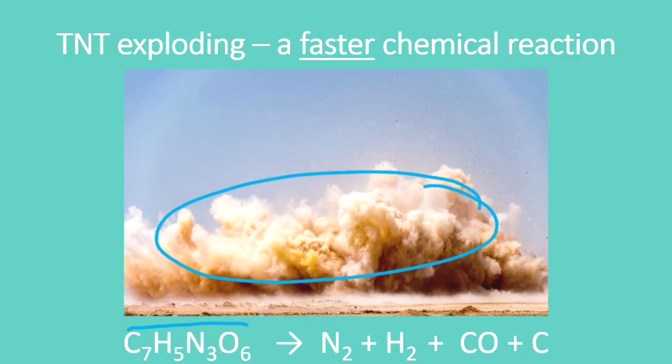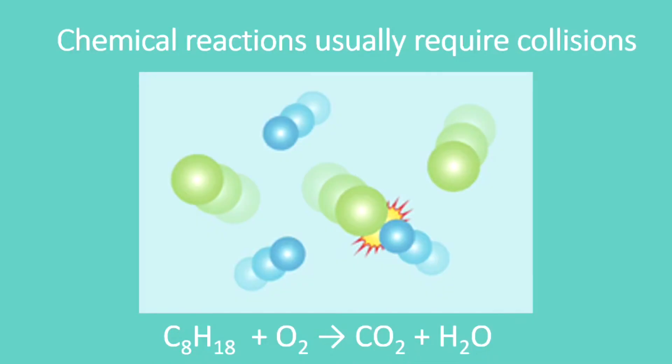Now, if we want to understand reaction rates, we have to understand what's called collision theory. It sounds fancy, but basically it just means that chemical reactions require collisions to go forward in most cases. Not every single case, but in nearly all cases, we have to have molecules colliding to run a chemical reaction. For example, pretend that these green spheres represent gasoline, which is C8H18,